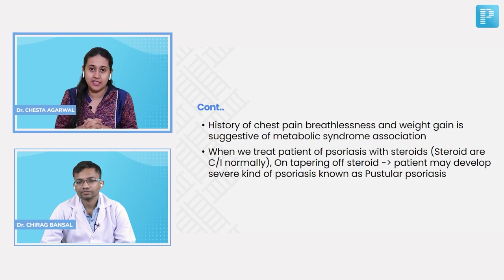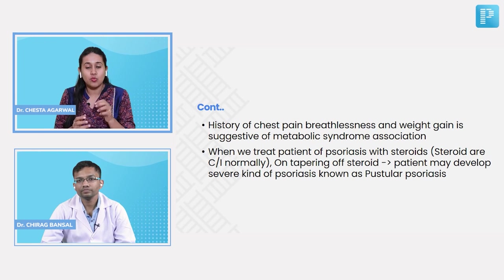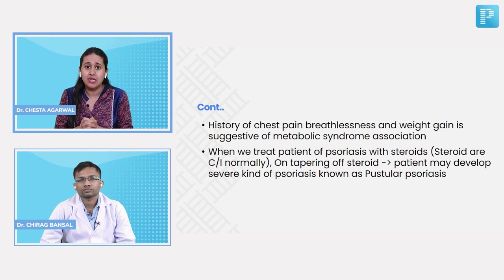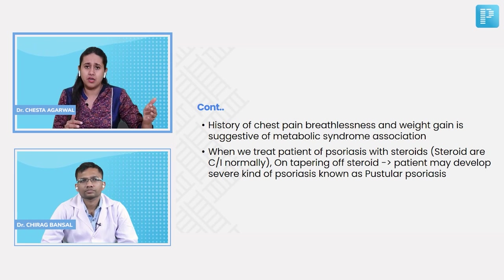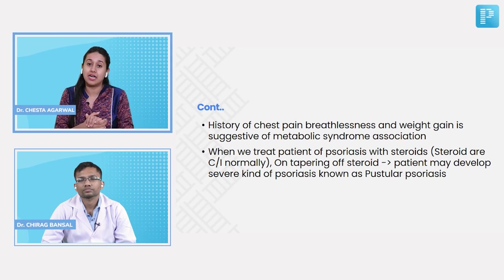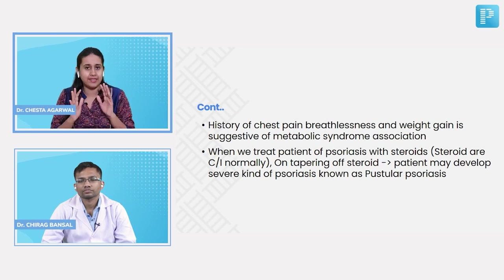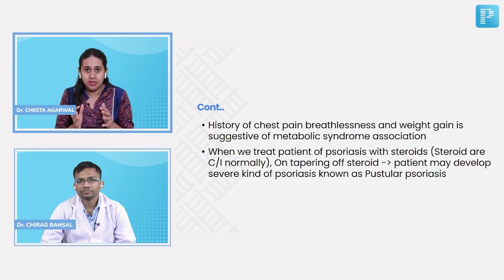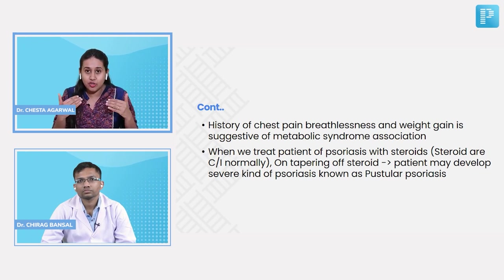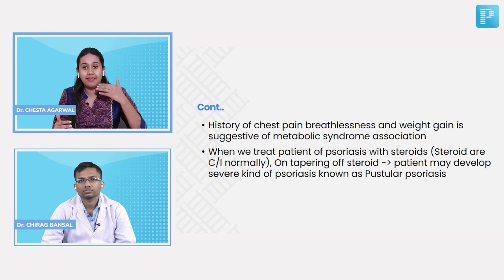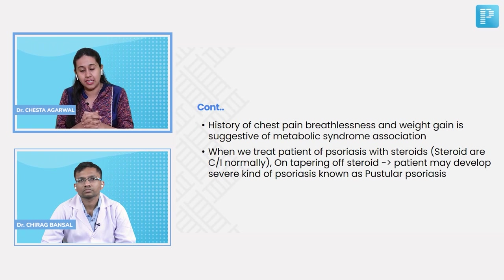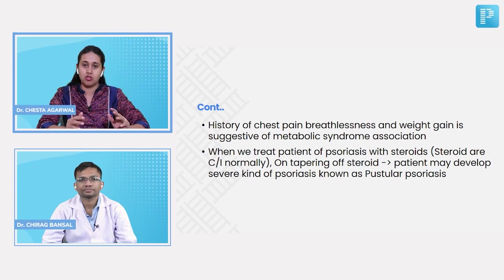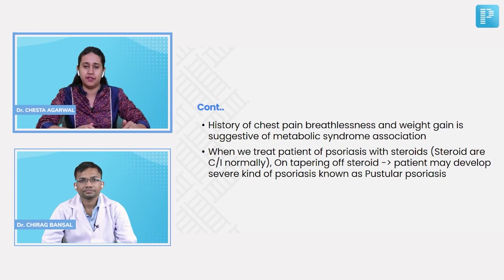We have a variant called erythrodermic or pustular psoriasis. When a patient takes steroids — often from quacks or local doctors — nothing happens during therapy. But when steroids are withdrawn, the well-defined lesions are lost, become more diffuse and ill-defined, and involve the whole body. This is erythrodermic or pustular psoriasis. These types need to be ruled out as treatment and clinical presentation differ significantly from psoriasis vulgaris.